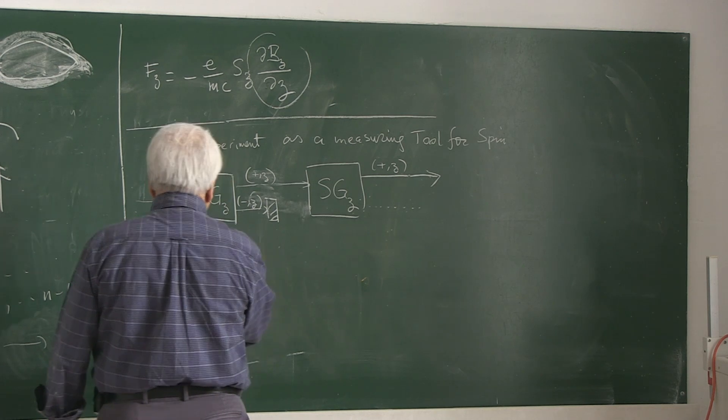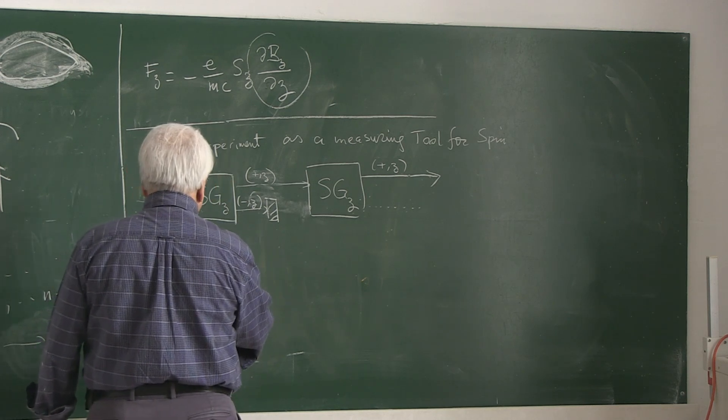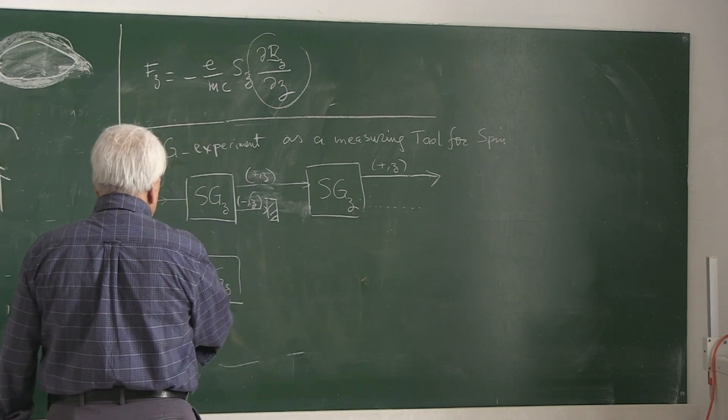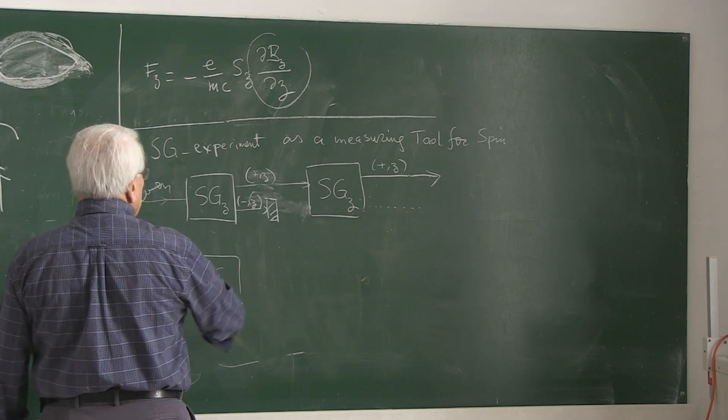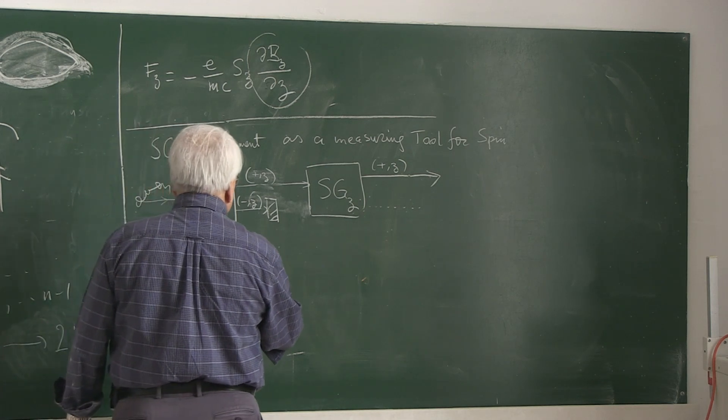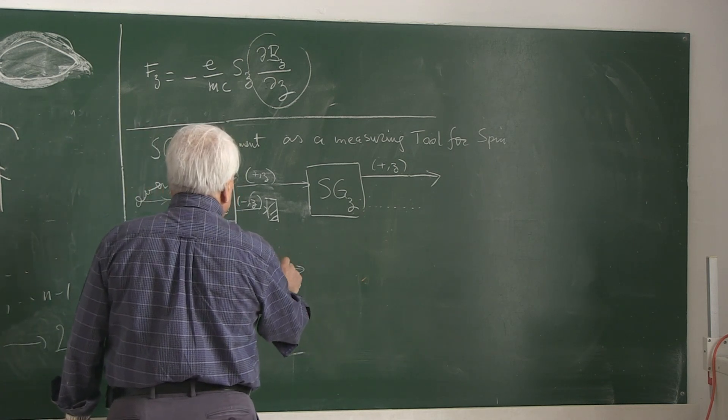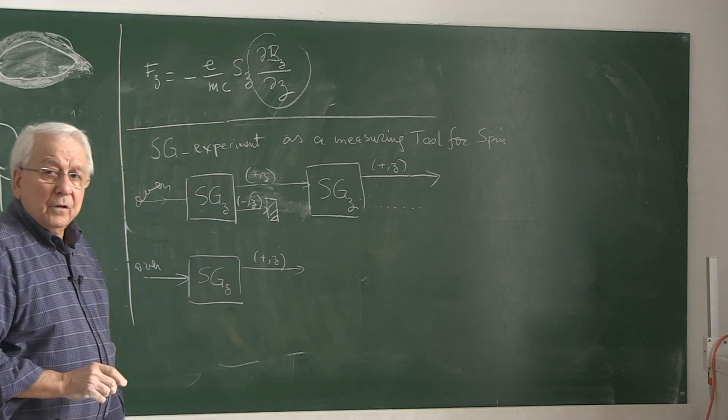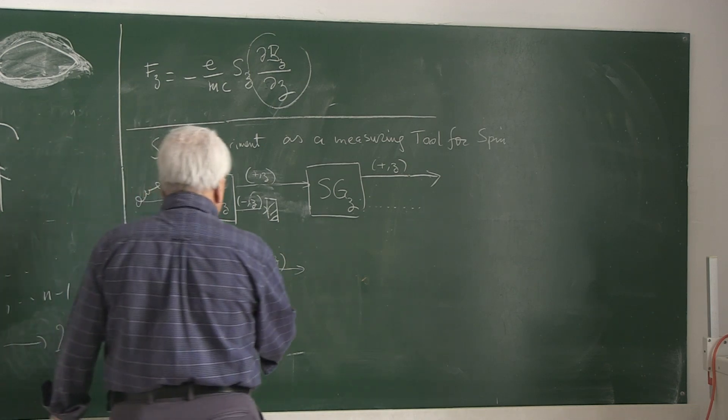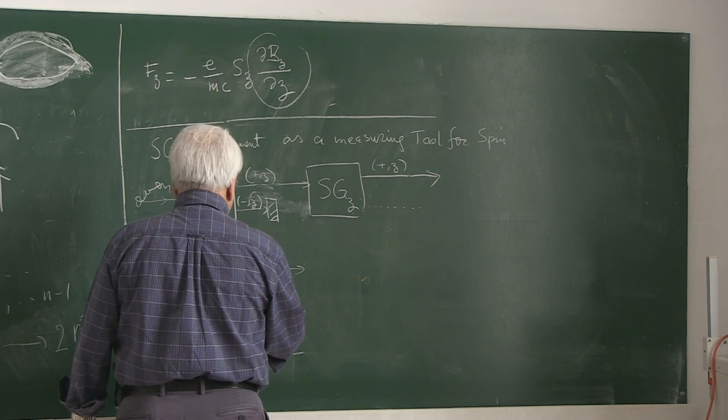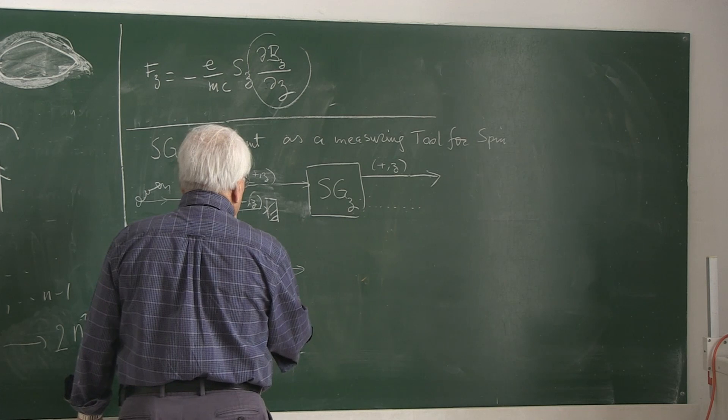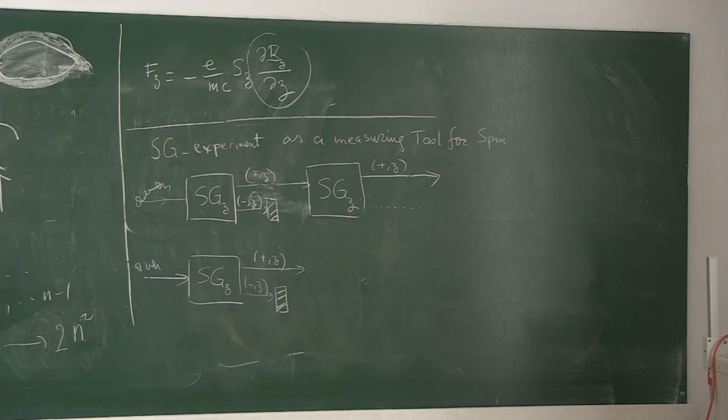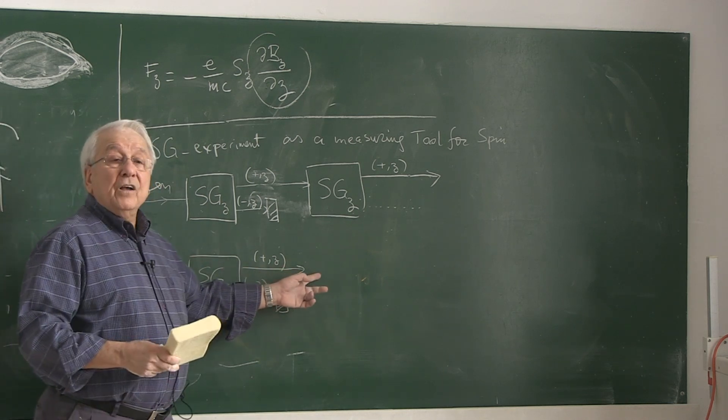This is another experiment. I have a Z-type of Stern-Gerlach gadget. This is coming from the oven. So this is the randomly distributed one. So it is again polarized. Half of the beam is polarized in the Z-direction. And half of the beam is polarized in the minus direction. We again block the down-polarized beam.